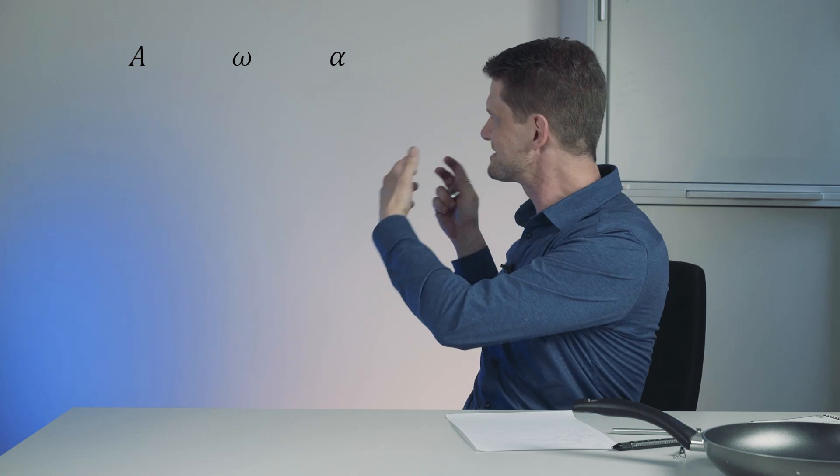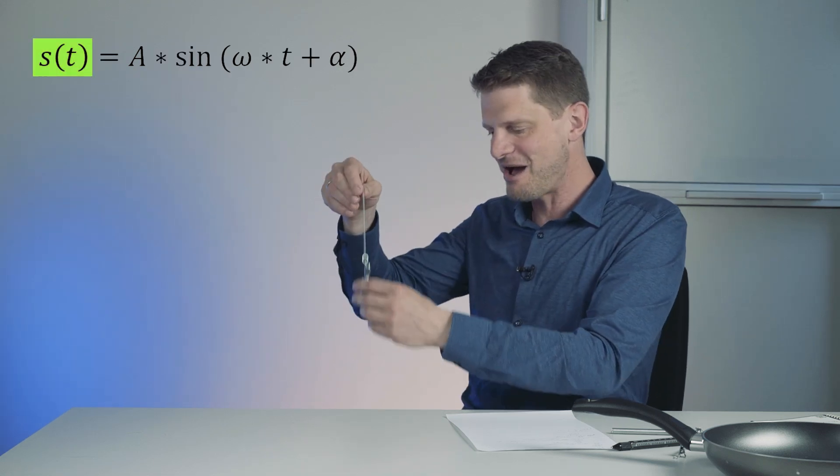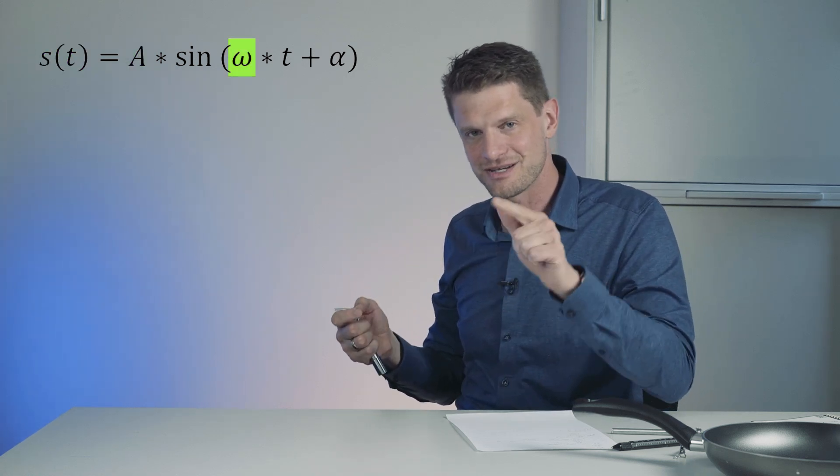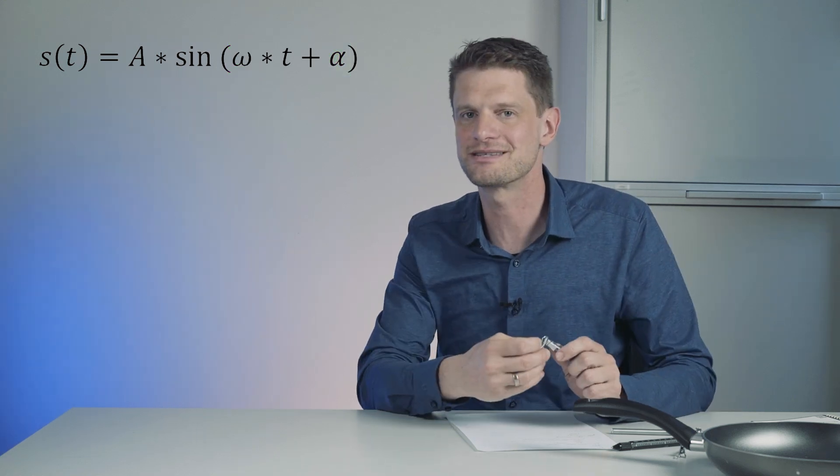And these three values you can put in a simple mathematic formula. Let's say the position of my mass depends on the amplitude, on the frequency omega 2π f, plus its phase level. And this is just multiplied with the time.